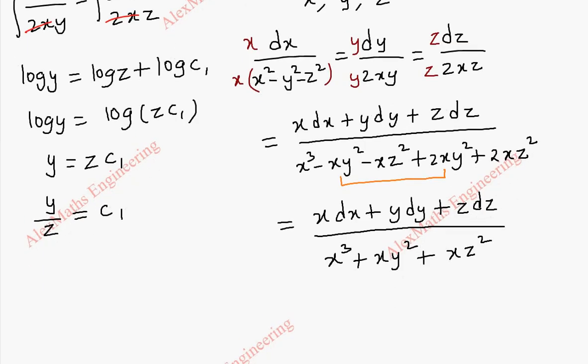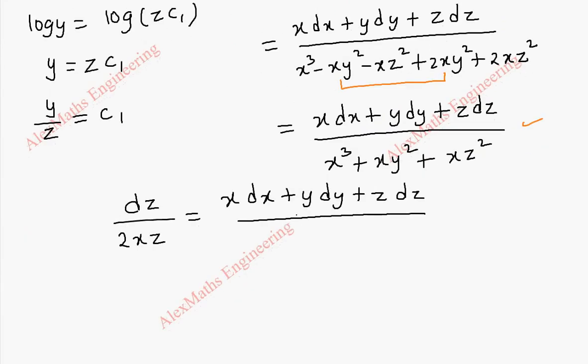Now we shall take two terms. Let us take the third term and this last term together, leaving the multipliers. Now it is dz by 2xz equal to, here it is x dx plus y dy plus z dz whole divided by, and in the denominator we can take x common. So the remaining is x squared plus y squared plus z squared. So here we can cancel x on both sides.